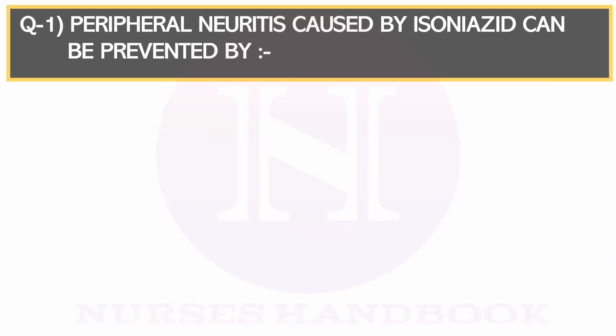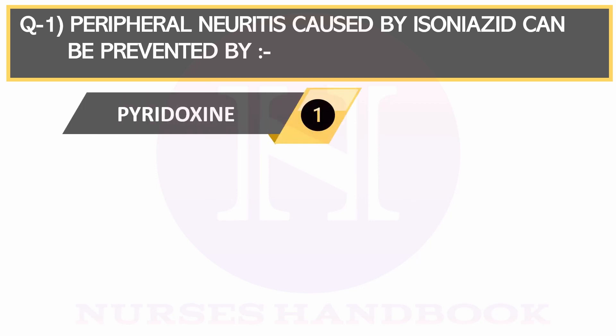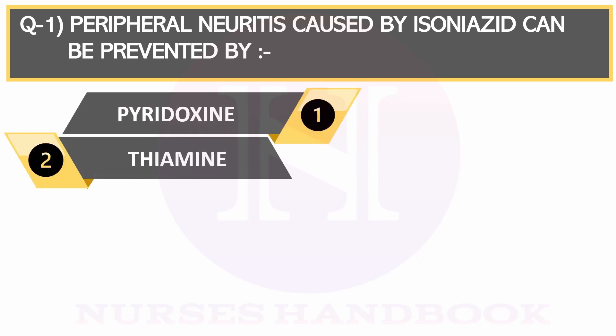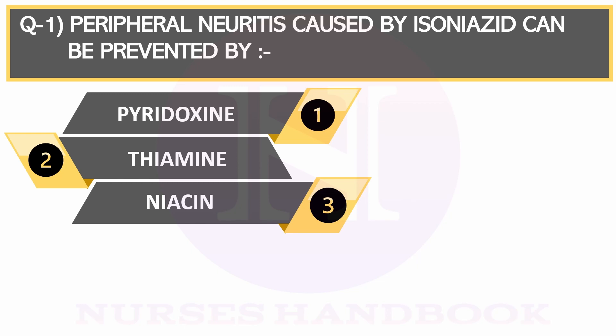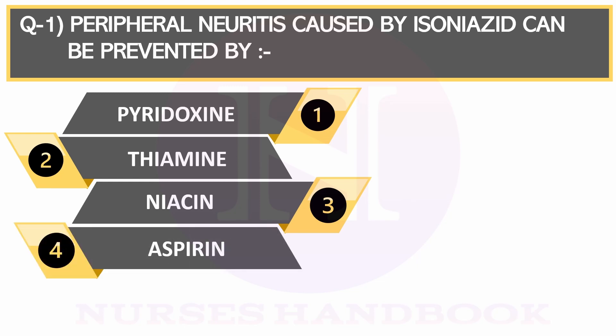Question number 1. Peripheral neuritis caused by isoniazid can be prevented by Option 1: Pyridoxine, Option 2: Thiamine, Option 3: Niacin, and Option 4: Aspirin.